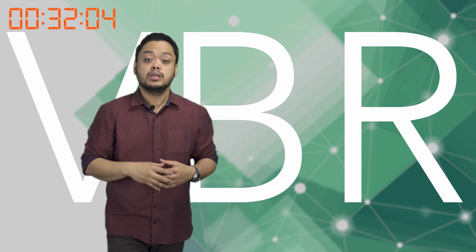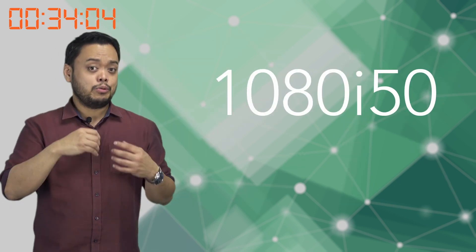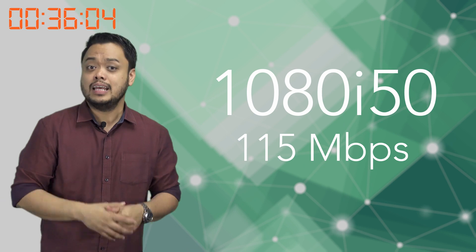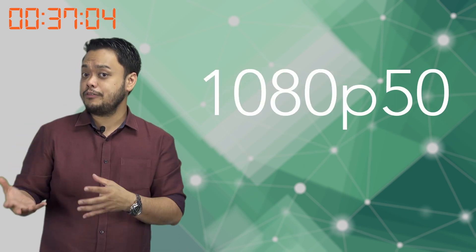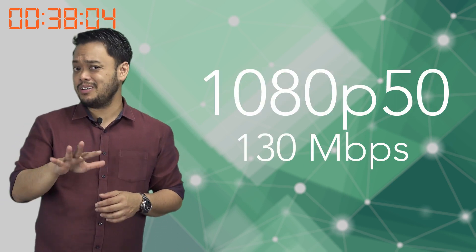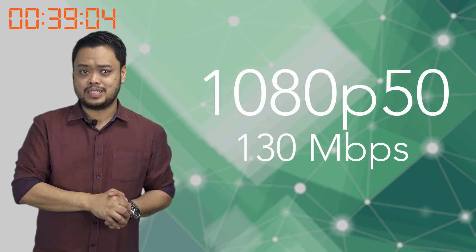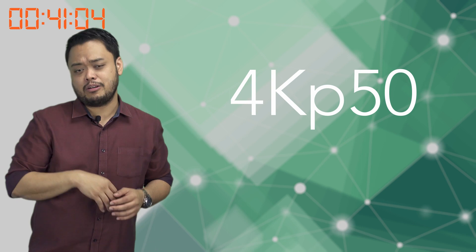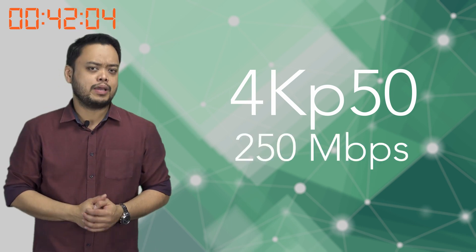The bitrate can vary depending on your source. For instance, a 1080i50 will be around 150 Mbit per second, 1080p50 will be around 130 Mbit per second, and 4Kp50 will be around 260 Mbit per second. So these are all target data rates.